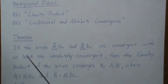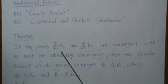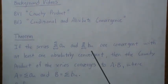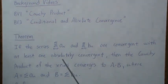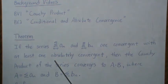So the theorem is this: if we have two series AN and BN and they're convergent with at least one absolutely convergent,